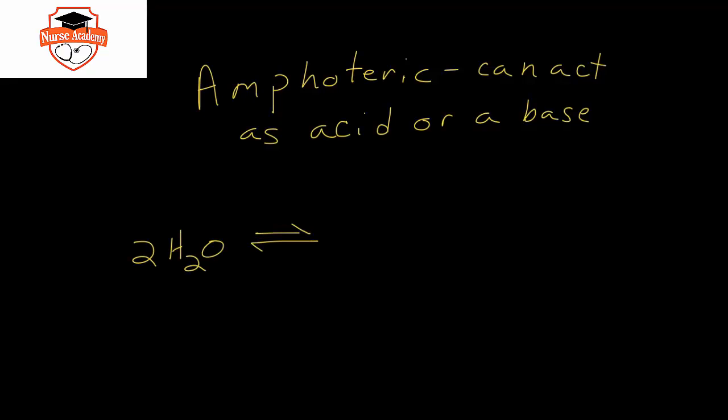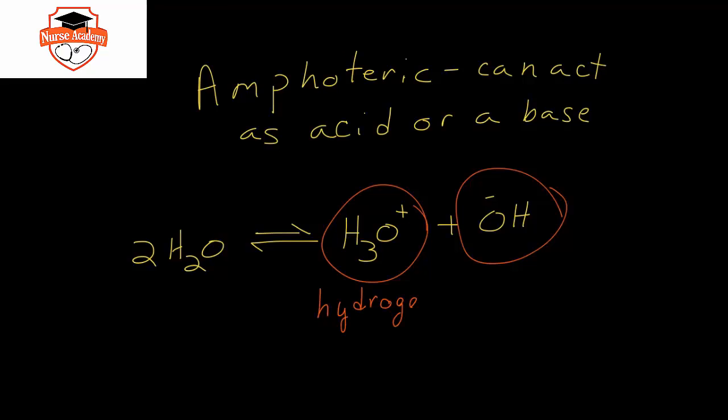One more thing that we need to discuss, which is the term amphoteric. And things that are amphoteric can act as either an acid or a base. Water is always in a constant equilibrium where it's producing both hydronium ion and hydroxide ion. And because of this, water is basically the epitome of an amphoteric compound. Because it both produces hydronium ion and hydroxide ion, and therefore, it produces a hydrogen ion donor and a hydrogen ion acceptor.